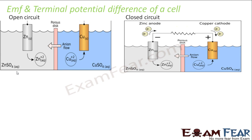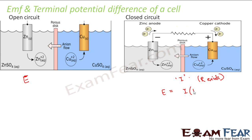In an open circuit we talk about the EMF, E. Whereas in a closed circuit there is a current I flowing through the circuit. In a closed circuit, suppose there is some external resistance R connected. We can say E is equal to I capital R plus small r — this is the EMF of the cell, equal to the current flowing externally plus the current flowing internally, that is IR plus Ir.